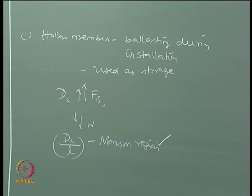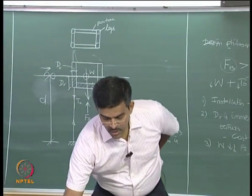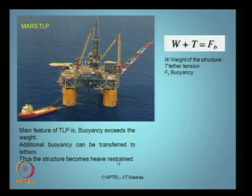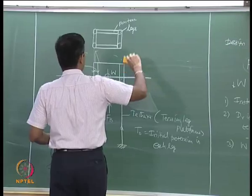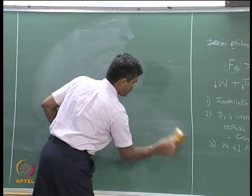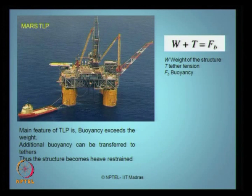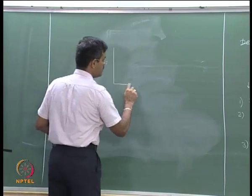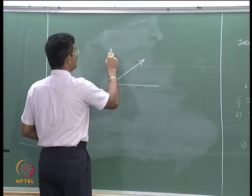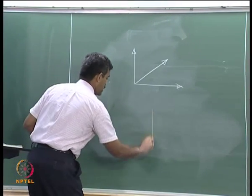The greatest technical and structural advantage gained from a TLP is that the structure actually becomes heave-restrained. It becomes very stiff in the heave degree of freedom. Let us now quickly see what the classical degrees of freedom are and where they are measured. TLP has two categories of degrees of freedom.